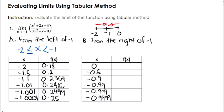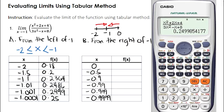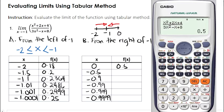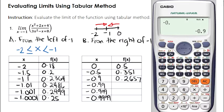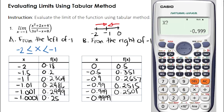Similar to what we have done in the first table, we're going to use our calculator to solve for the values of f. We click the Calc button again and assign the value of x. Starting from 0, the value of f is equal to 0.5. If the value of x is equal to negative 0.5, f is equal to 0.351. We continue solving, and lastly, if x is equal to negative 0.9999, f is equal to 0.25.